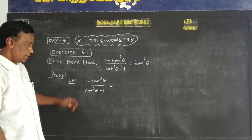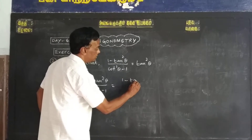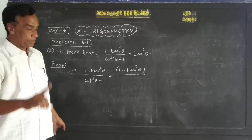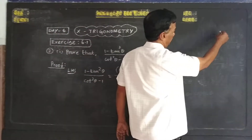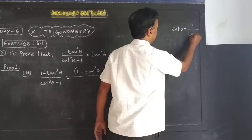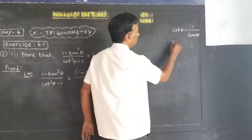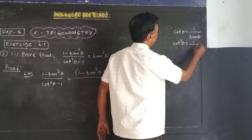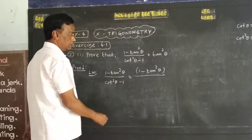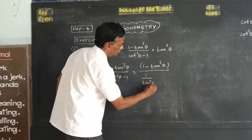Equal to 1 minus tan squared theta. Here, cot theta equals 1 by tan theta. So cot squared theta equals 1 by tan squared theta. Then cot squared theta is 1 over tan squared theta.